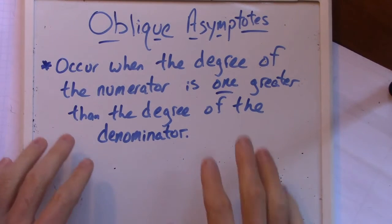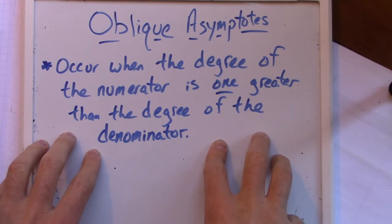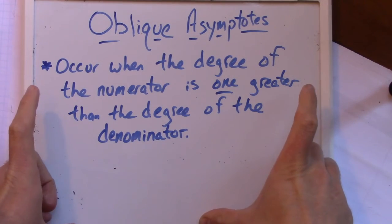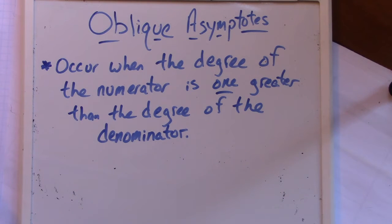Alright, here we go. Oblique asymptotes. I kind of glossed over this before when we did the horizontal asymptotes. We had three different categories and we talked about the degree of the numerator and the degree of the denominator.